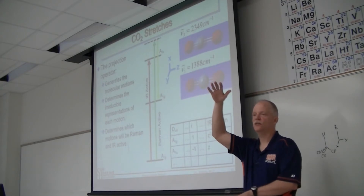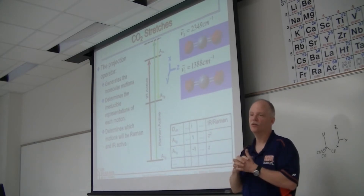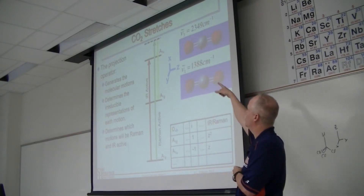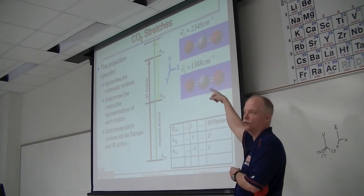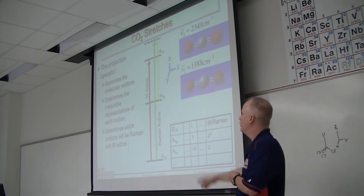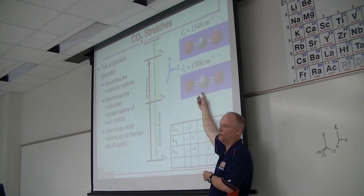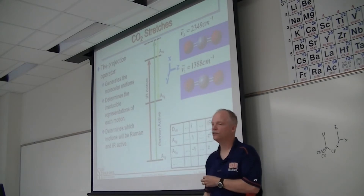You need something that oscillates the plus and minus charges in a molecule for it to absorb light. The carbon atom going back and forth — it's more positive than the oxygens — creates an oscillating electric field in the molecule, and that's what light can interact with. In the symmetric stretch, the positives and negatives are getting farther apart but it's still symmetric no matter where it is. So there's no electric dipole change, and this one is not infrared active. But it is Raman active.